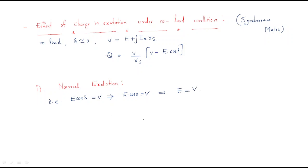Since E and V are the same, the E vector and V vector are equal, and automatically the armature current Ia will be zero. When both terminal voltage and excitation EMF have the same magnitude, the current magnitude is zero. Therefore, active power P = V·Ia·cos φ = 0, since Ia is zero.